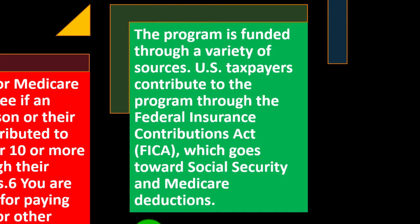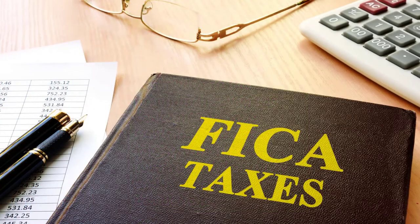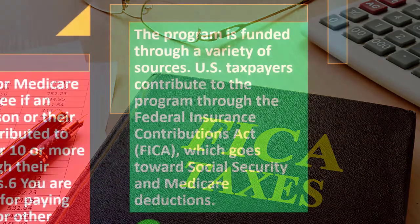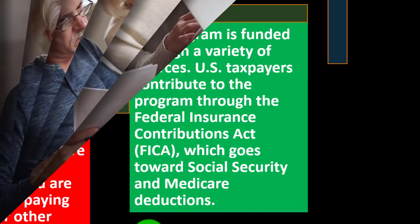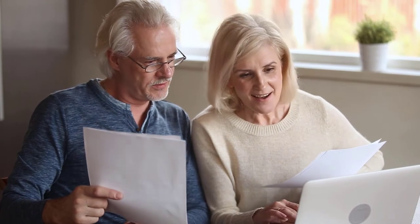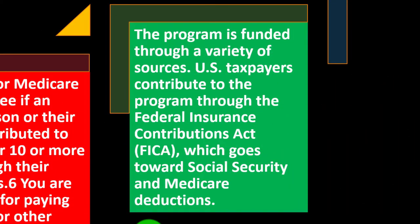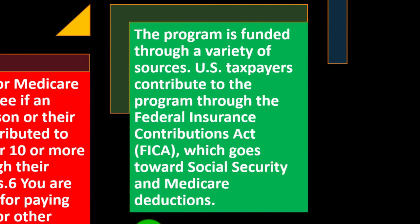The program is funded through a variety of sources. U.S. taxpayers contribute through the Federal Insurance Contributions Act (FICA). When you're working and paying into the system through payroll taxes, those contributions go toward Social Security and Medicare. The employer matches the contribution. If you're self-employed, those are your self-employment taxes. At retirement, that's when you pull the benefits from Social Security and Medicare.